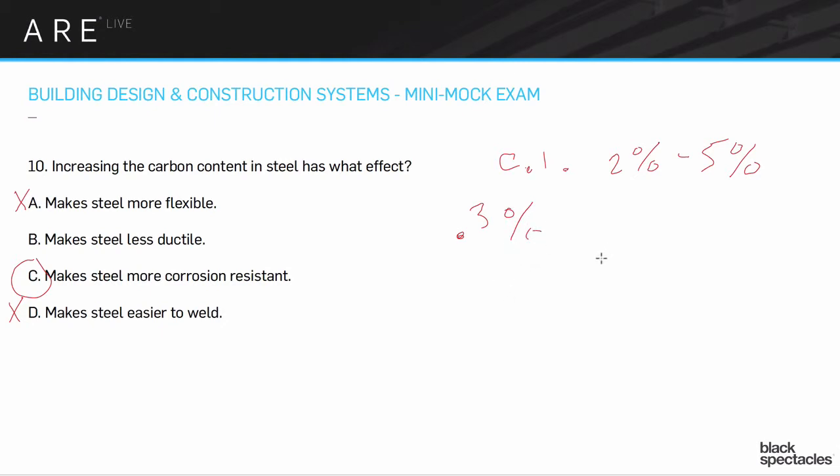As you get into higher content carbon steels, you might get up to like point five percent, maybe even a little bit higher than that, probably less than one percent, definitely less than two percent. Those ones have certain benefits, but as you get up to those larger numbers, you're going to start losing some of the ductility.